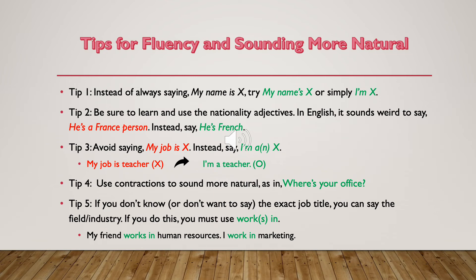Our last tip deals with job titles. Sometimes you don't know the exact title, but you know the field or industry a person works in. In that case, use the preposition 'in' to talk about the field. For example, if my friend has a job in human resources but I don't know the exact title, I can say 'my friend works in human resources.' If my friend works in marketing, I can say 'she works in marketing.' This lets you explain a little about the person's job without knowing the exact title — very useful.